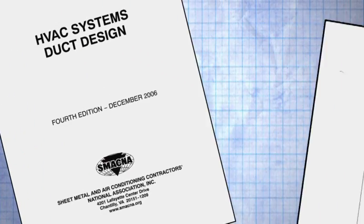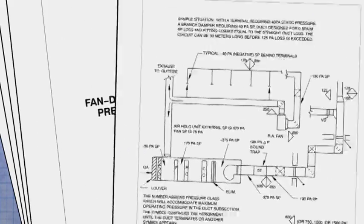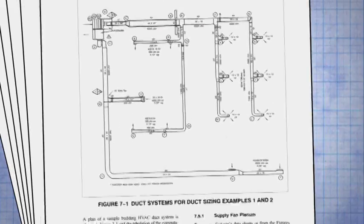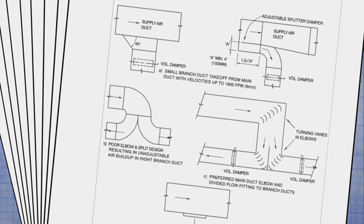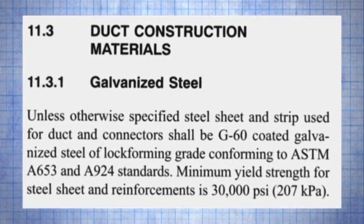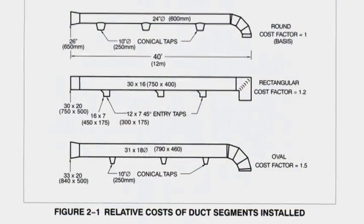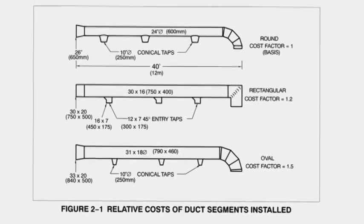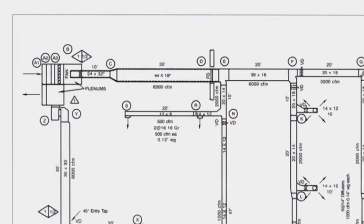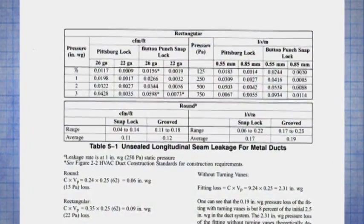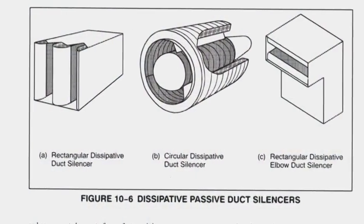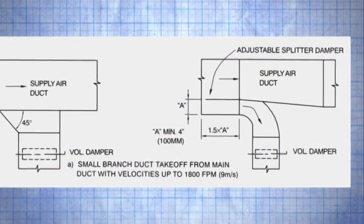The HVAC Systems Duct Design Manual presents methods and procedures to design HVAC air duct distribution systems. In addition to the basic engineering guidelines for the sizing of HVAC ductwork systems, the manual also provides related information on materials, relative economics of duct system types, duct system layout and sizing, pressure losses, fan selection, duct leakage, acoustic considerations, and testing, adjusting, and balancing guidance.